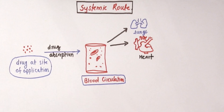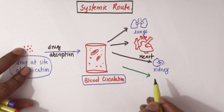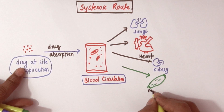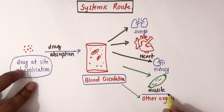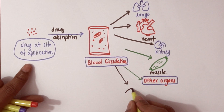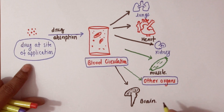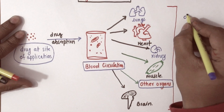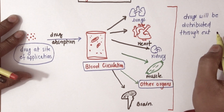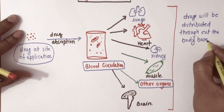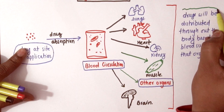Once the drug is absorbed, it will get distributed to various organ parts such as lungs and heart — in fact it will go to heart first — and from there it will get distributed to various other organs based on blood supply, such as kidney, muscle cells (smooth or skeletal), liver, spleen, legs, and also the nervous system like brain, spinal cord, and neurons. So the drug will be distributed throughout the body based on blood supply to each organ.